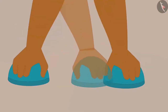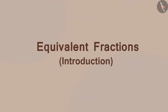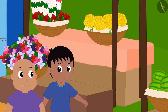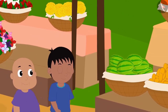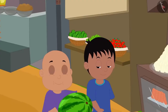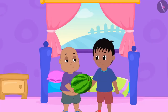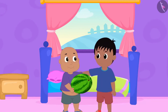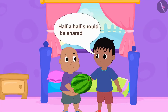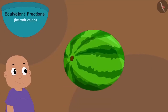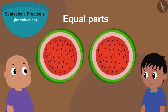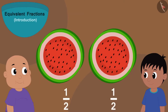Hello children, in this video we will learn about equivalent fractions. Raju and Babalu are going to buy a watermelon from the market. They bought a watermelon from Bunni's stall and took it to Raju's house. Raju told Babalu to divide the watermelon in two halves. Babalu cut it into two equal parts and gave one part to Raju. We can say that both Raju and Babalu got one by two, or half, of the watermelon.